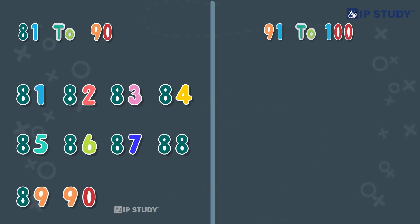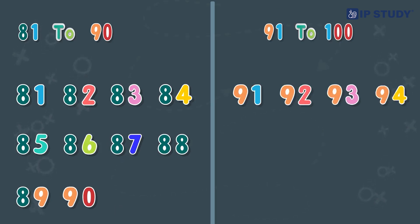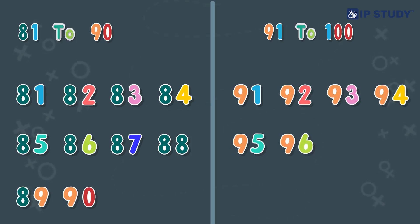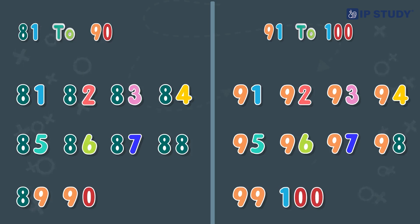And finally, from ninety-one to one hundred: ninety-one, ninety-two, ninety-three, ninety-four, ninety-five, ninety-six, ninety-seven, ninety-eight, ninety-nine, one hundred.